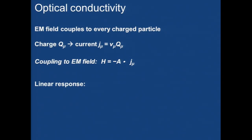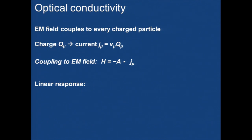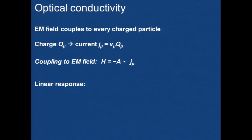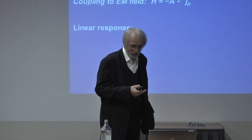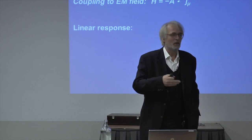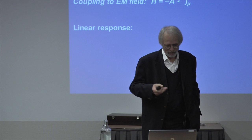I'll begin with optical conductivity. In the electromagnetic field, if you do optical conductivity, you're shining light on samples or through samples — you absorb light, refract light, or do nonlinear optics. In any case, the electromagnetic field couples to every charged particle. Different particles may have different charges. Usually we think in terms of the elementary charge, but we'll see through this talk that it doesn't always have to be the elementary charge. That's why we use the general symbol Q_μ.